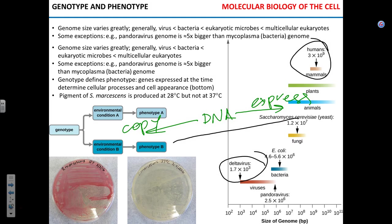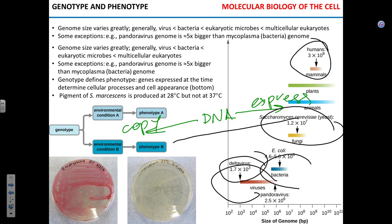As a general rule, viruses have the smallest genomes, then bacteria, then various types of eukaryotic unicellular organisms like fungi, unicellular algae, and protozoans, and then we have plants and animals. Of course, there are exceptions.